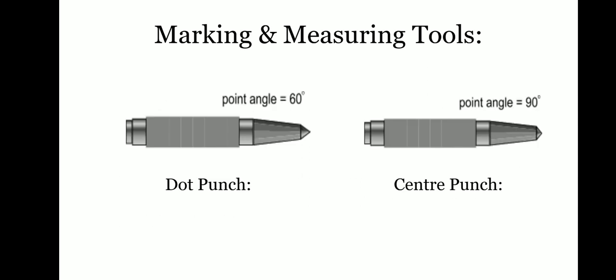One of the important tools we use for marking is punches. Punches are used for marking purposes. There are two types of punches: dot punch and center punch. Dot punches are used for marking dotted lines, and center punches are used to mark the center of a hole before drilling.